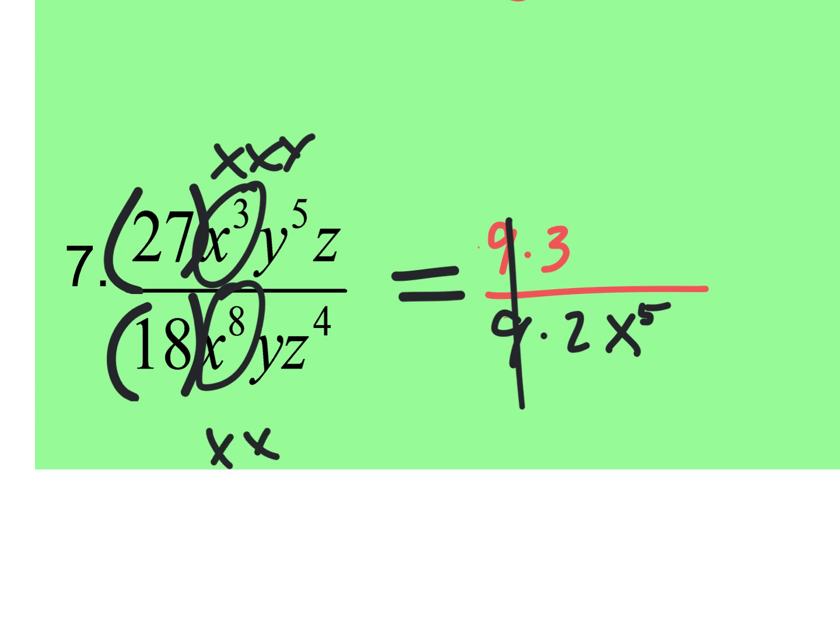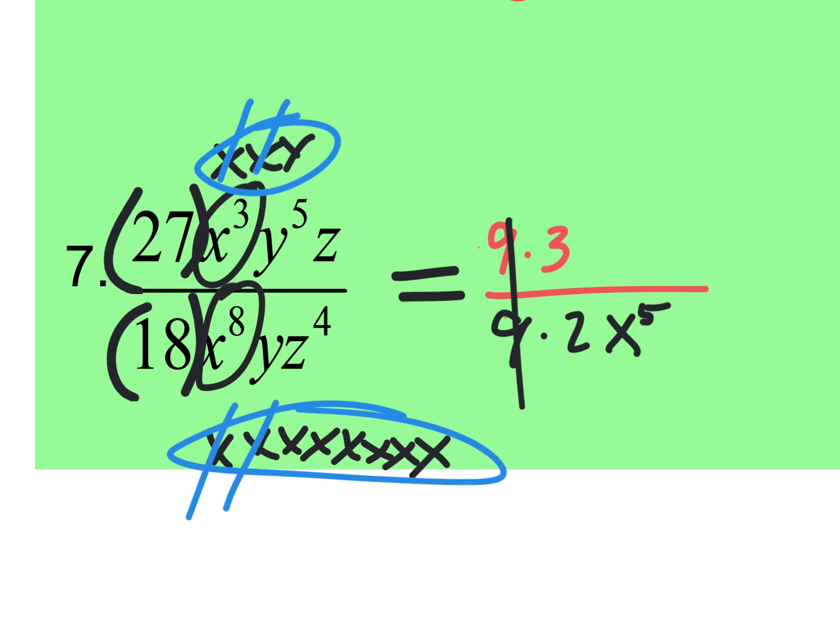If you really need me to, I can go like this. Nope. Watch. Do you get that there's three of them on the top and there's eight of them on the bottom? Cancel. Cancel. Cancel. Do those X's look negative? Nope.